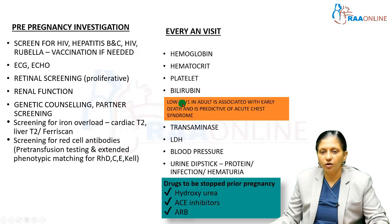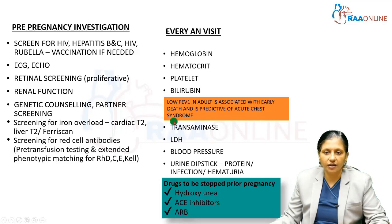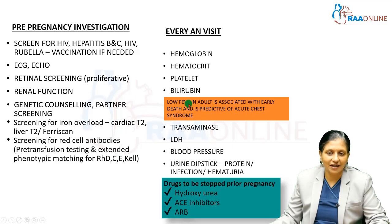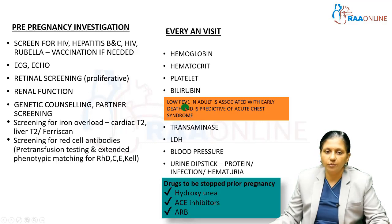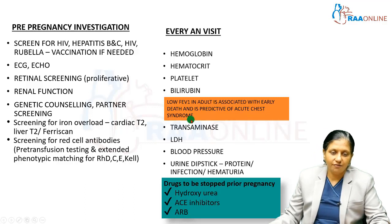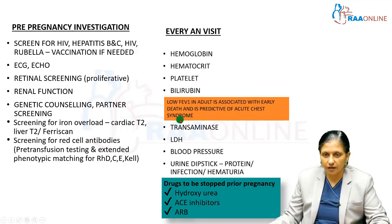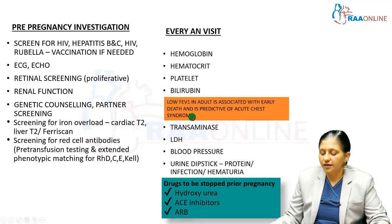We should also assess forced expiratory volume in the first second (FEV1). In adults, a low FEV1 is associated with early death and is predictive of acute chest syndrome. A pulmonology opinion and pulmonary function testing should be obtained, and the patient can be given spirometry exercises to increase functional lung capacity.